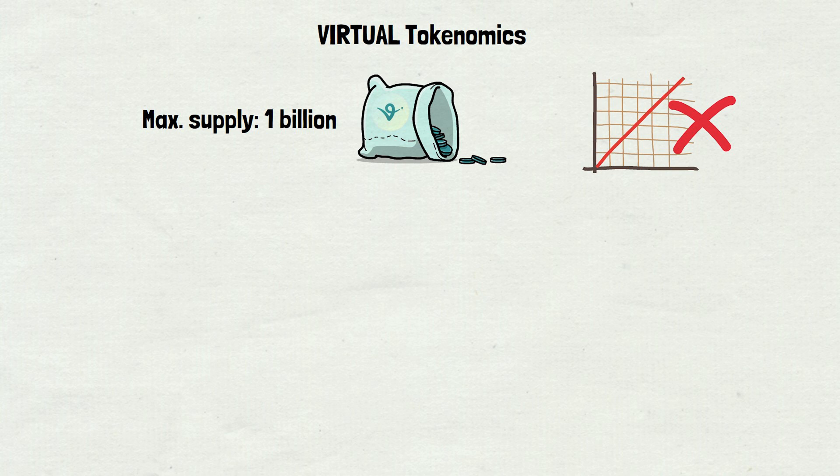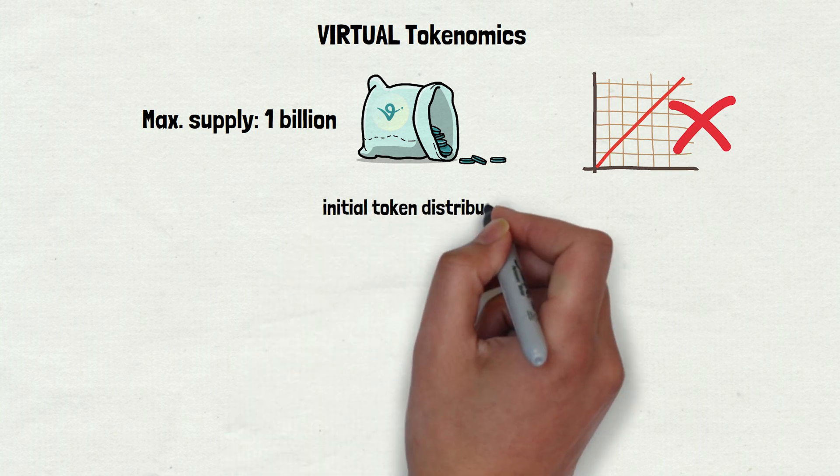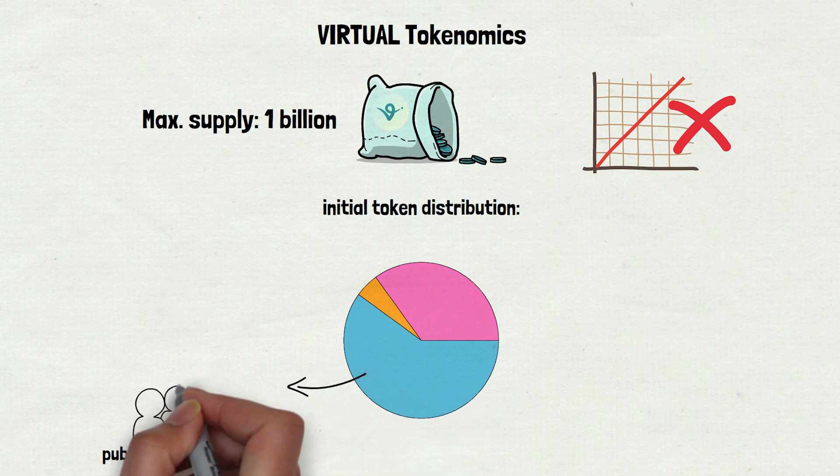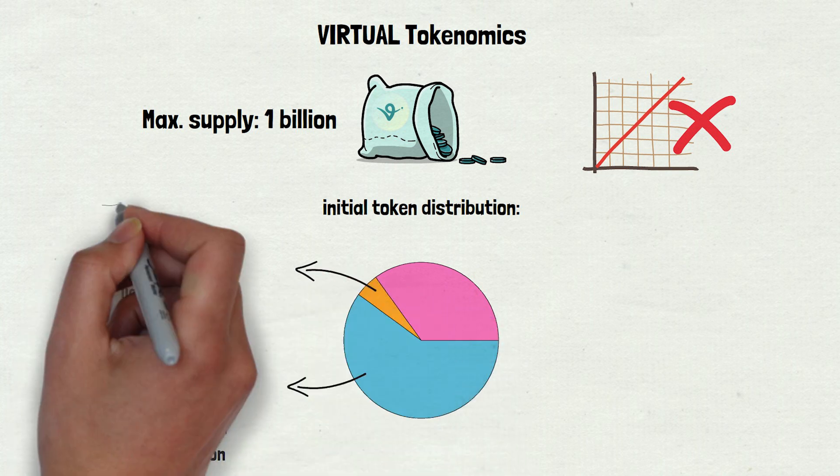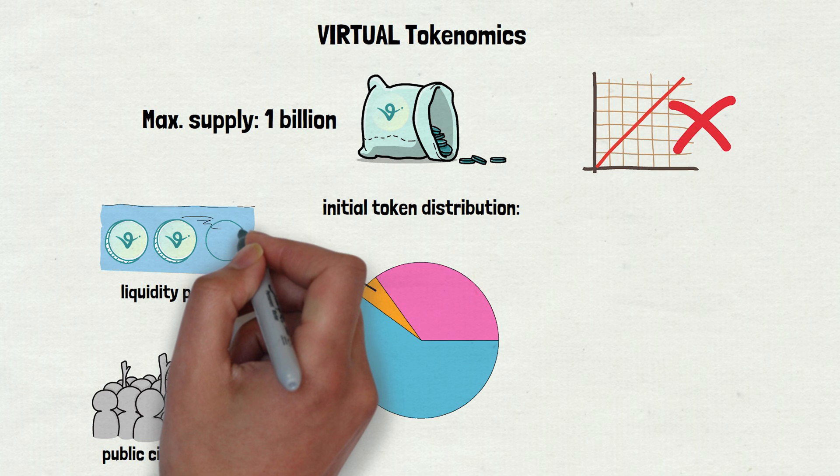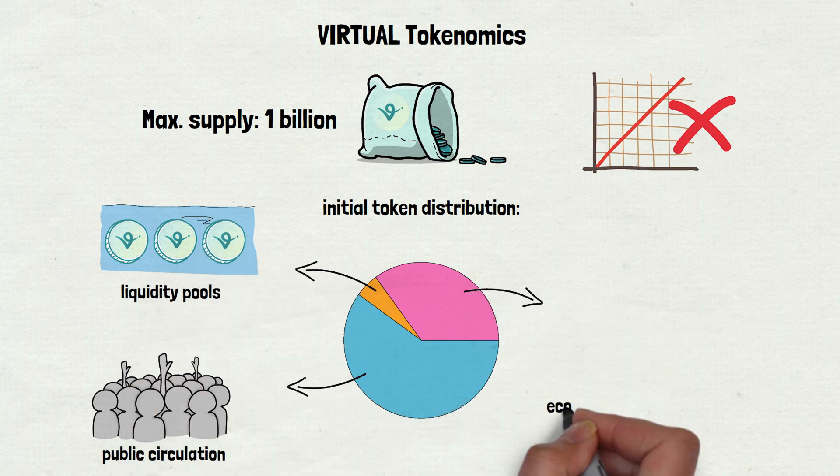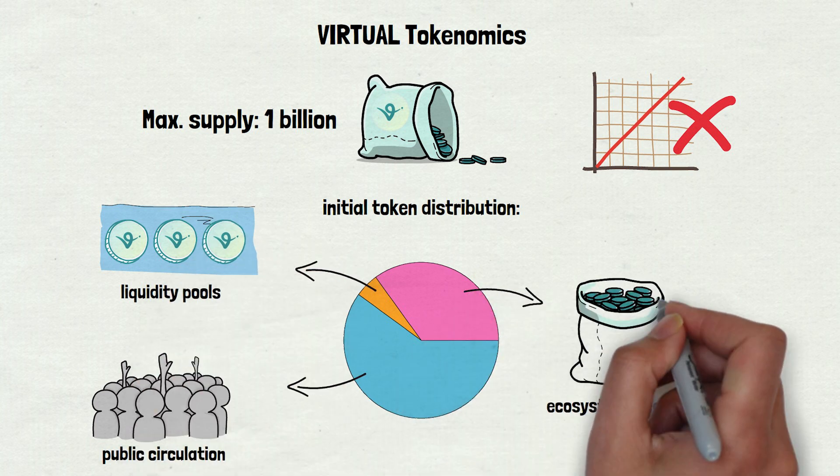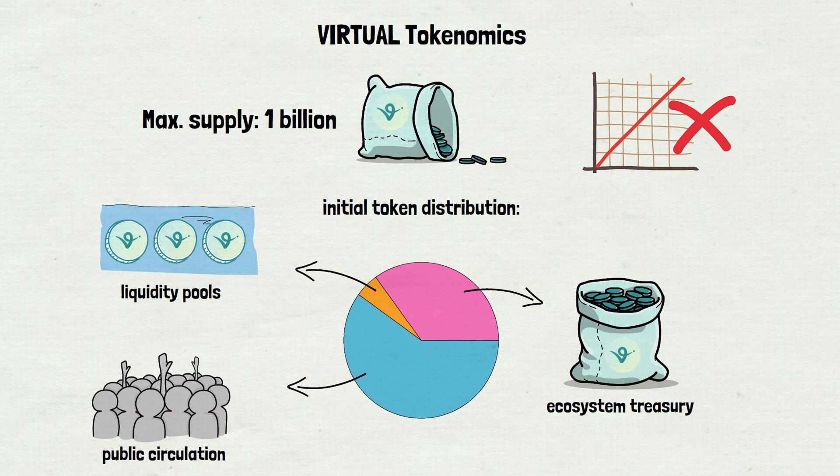The initial token distribution breaks down like this: 60% are in public circulation, 5% are allocated to liquidity pools, and the last 35% is held in the ecosystem treasury, which is managed by the community through the DAO.